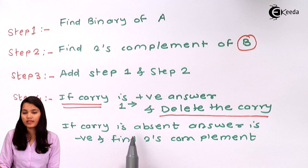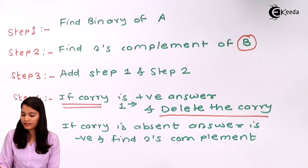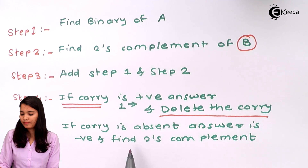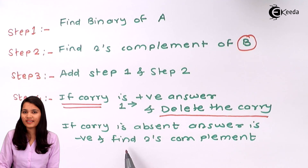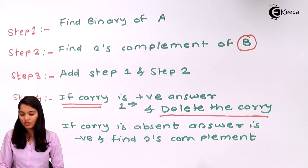Now, if the carry is absent, the answer is negative. To get the correct answer in that case, you have to find out the 2's complement of the result.